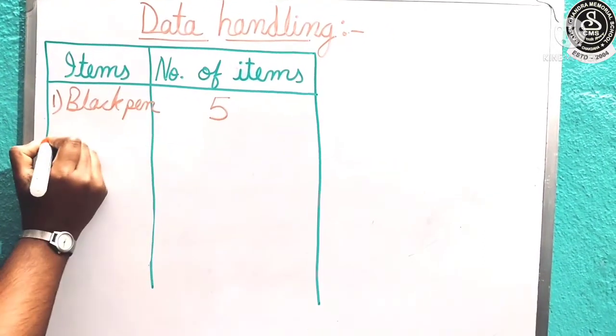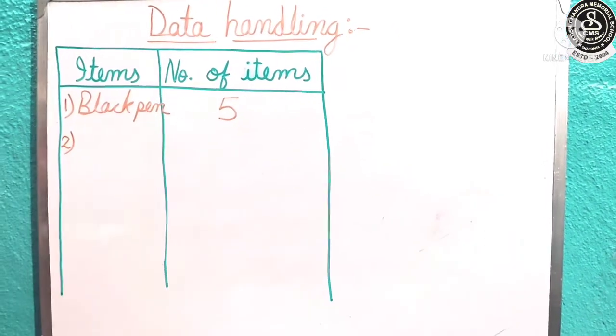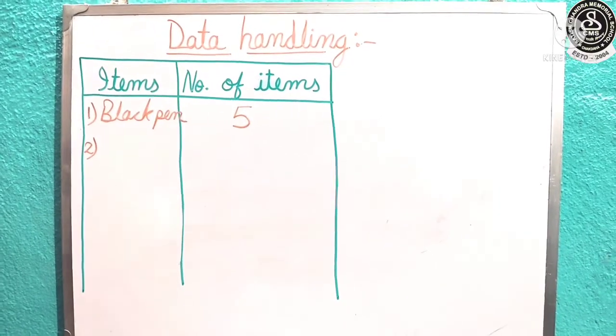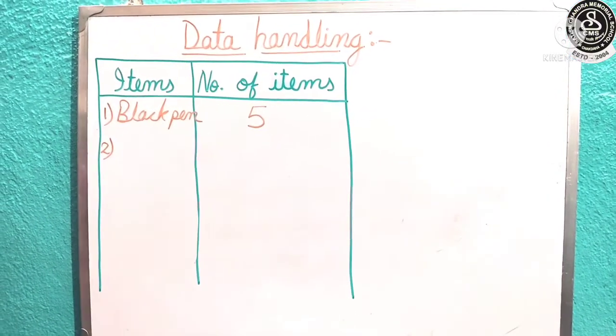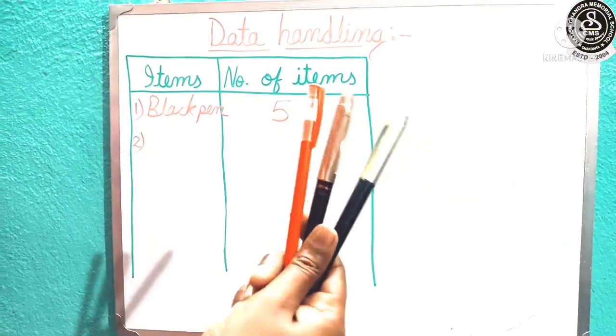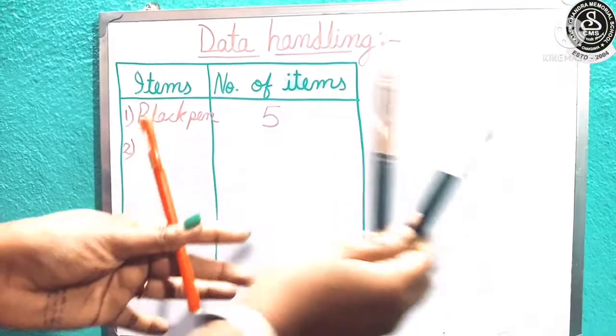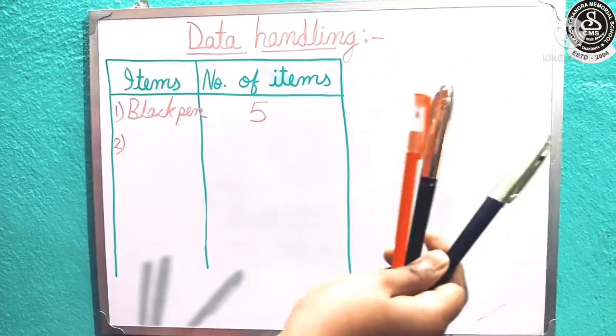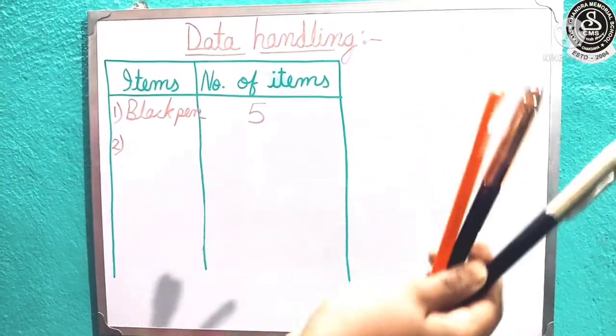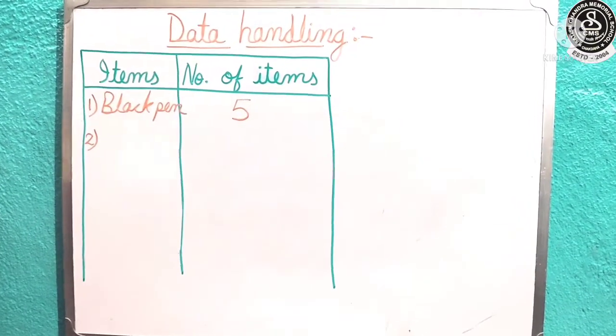Now let us see the second item. Number 2 item here, I have some blue pen. Yes, these are all blue ink. 1, 2 and 3. So I have total 3 blue pen. I am going to write it here.